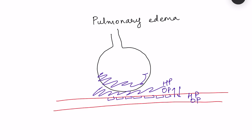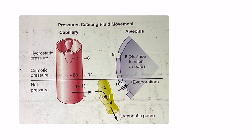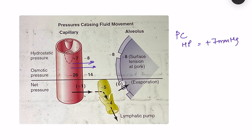If capillary permeability increases, then with the same balance of forces more fluid movement will occur. Now let us see what the Starling's forces are that operate in the lungs. This diagram taken from Gaiden shows the Starling's forces operating in the lungs - what forces are promoting fluid movement and what forces are opposing it. In pulmonary capillaries the hydrostatic pressure is quite less - pulmonary capillary hydrostatic pressure is plus 7 millimeter mercury, and hydrostatic pressure is the push force which causes movement of fluid from the capillary towards the interstitial side.